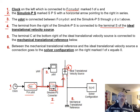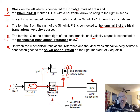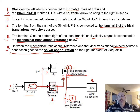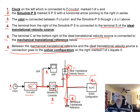Element five is terminal C at the bottom of the ideal translational velocity source, connected to the mechanical translational reference below. Element six is the solver configuration block, connected between the mechanical translational reference (five) and the ideal translational velocity source (four), with f(x) = 0 labeled.